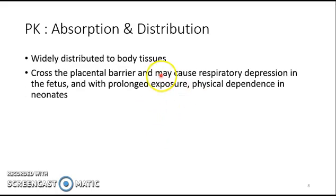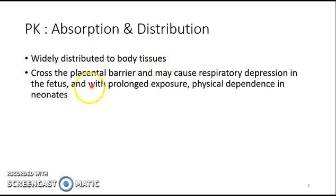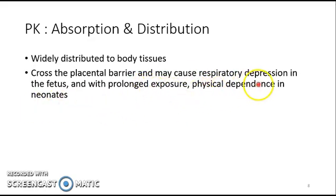Regarding the pharmacokinetics of opioid analgesics — in terms of absorption and distribution, opioids are widely distributed to body tissues. They can cross the placental barrier and may cause respiratory depression in the fetus. With prolonged exposure, neonates can develop physical dependence.